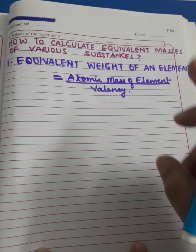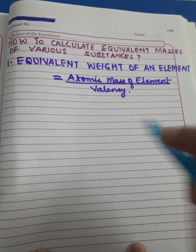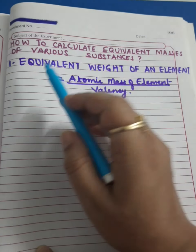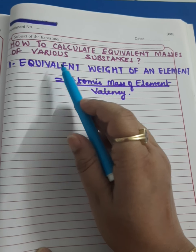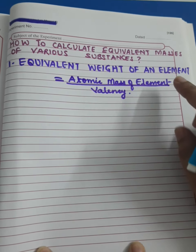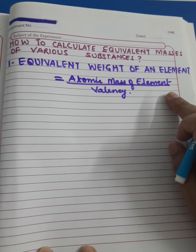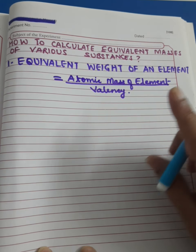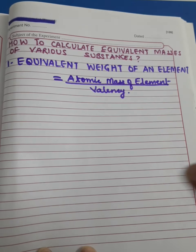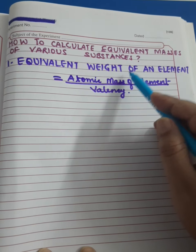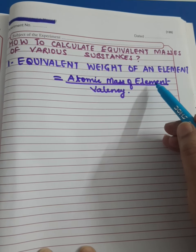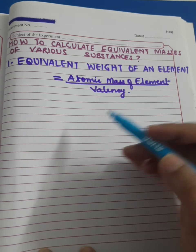Let us start with the first kind of substance — we are going to study equivalent weight of an element. There is a formula to calculate equivalent weight of an element, and I am going to discuss this formula for elements which do not show variable valency. So equivalent weight of an element equals atomic mass of the element divided by its valency.